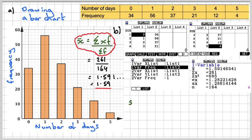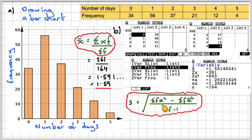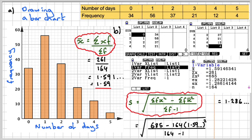For standard deviation, the formula is this, and some questions you do actually have to use this. But here we can get sigma Fx squared, which is 685 minus 164, the sum of the frequencies, down to the mean squared, 1.59 squared, not rounded off though, over 164 minus 1. And again, as I said, in the OCR MEI we use this one. So it's 1.286, which will give you 1.29 to two decimal places.